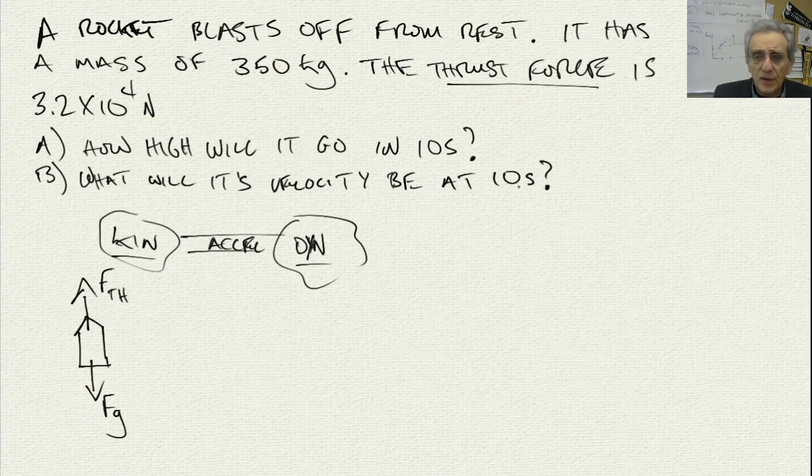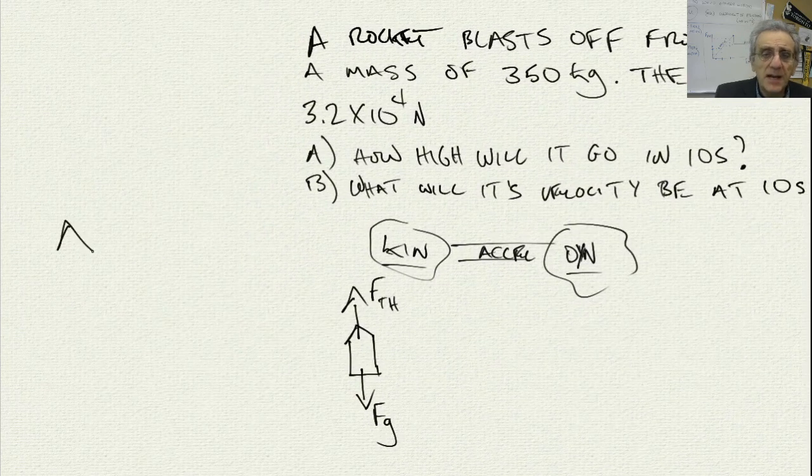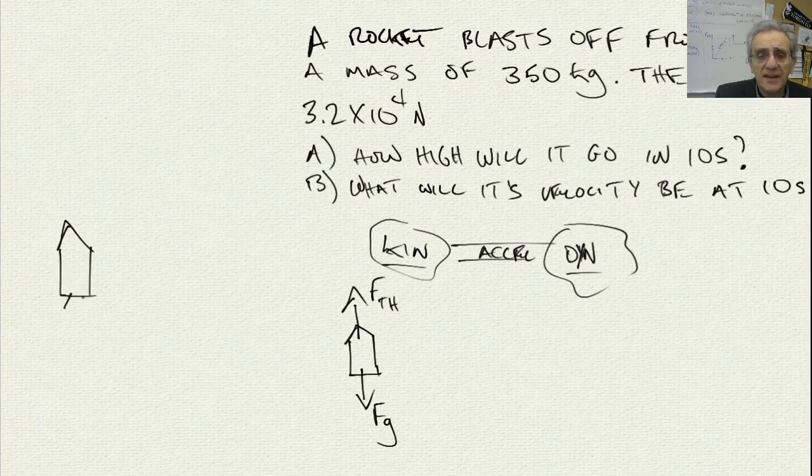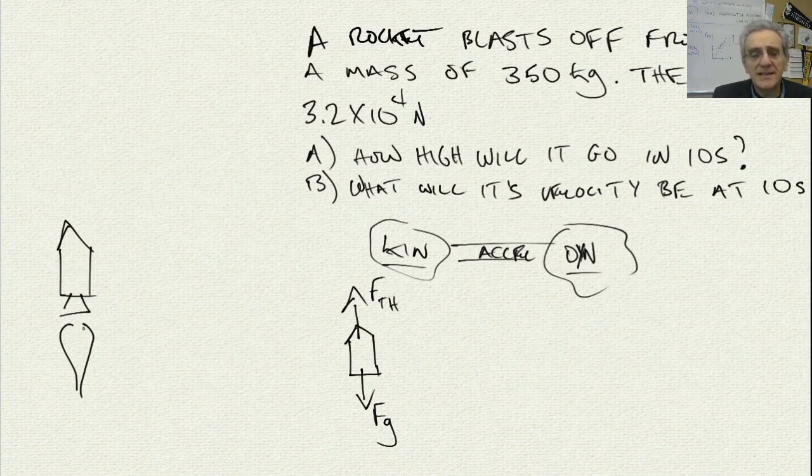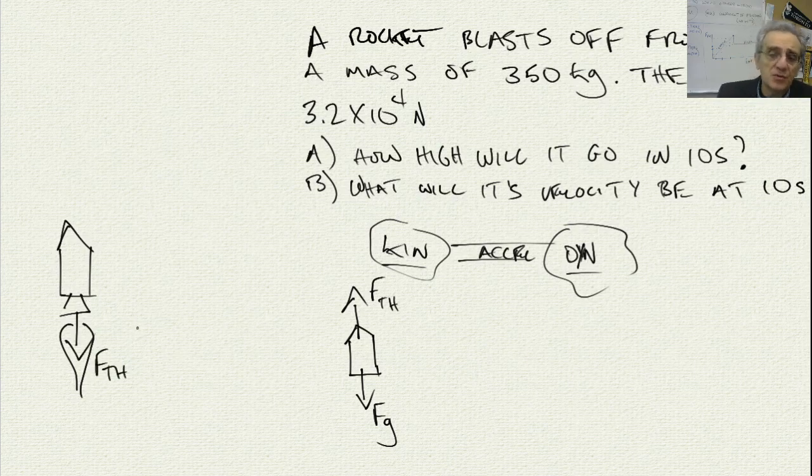Be careful. Sometimes you might see a graphic where you have a rocket that looks like this. And as soon as students see these flames coming out the backside of the rocket, some students mistakenly put the thrust force in the direction of the flames. This is wrong. Because if the thrust force was pushing the rocket down, then the rocket would never take off.